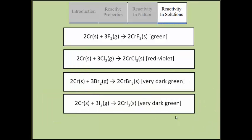Under milder conditions, chromium metal reacts with halogens fluorine, chlorine, bromine, and iodine to form trihalide.